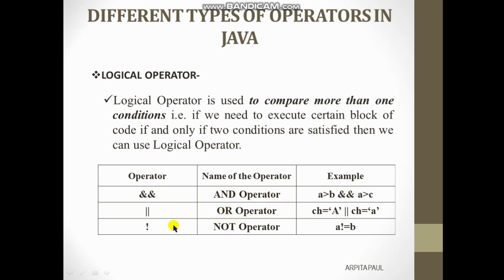The third operator is the exclamatory sign (!), called the NOT operator. This sign is used for negation checking or for complementing the value. We have already used this sign in the relational operator explained in the last video. For example: a != b. These are the commonly used logical operators, and we use them in Java programs.